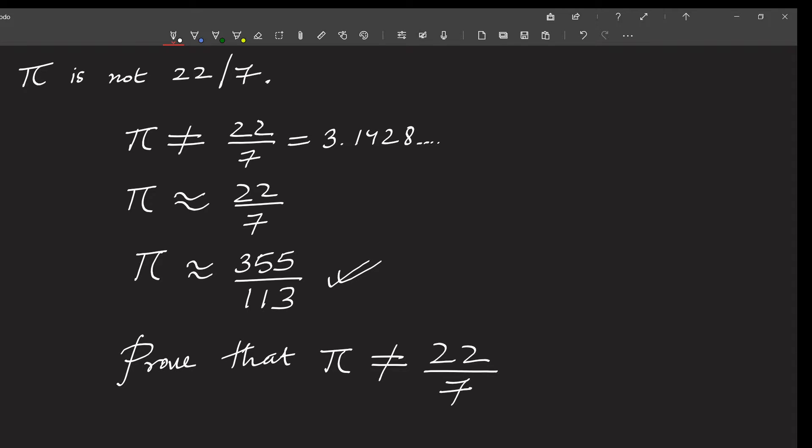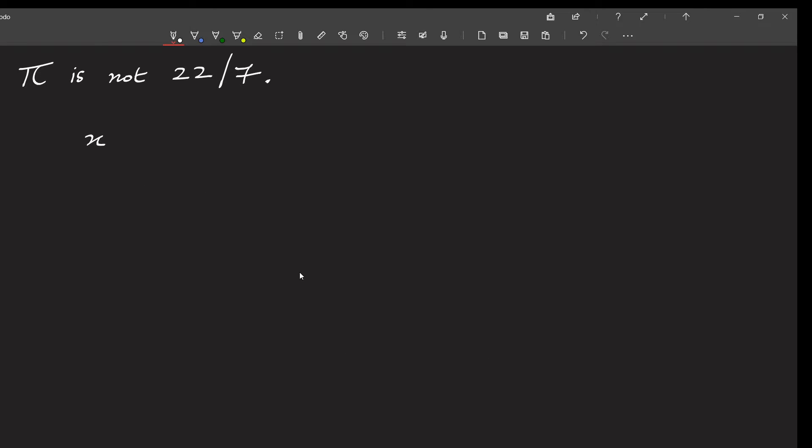In this video, we will prove that pi is definitely not equal to 22 by 7. We will show using simple elementary calculus how far pi is from 22 by 7.